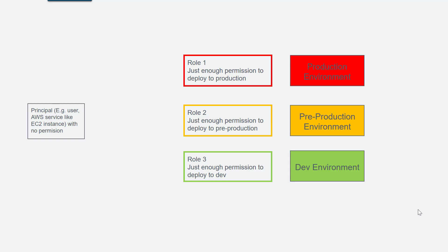Where this becomes handy is when you have multiple environments. Imagine you have three environments: production, pre-production, and development. Instead of three different users or three different EC2 instance profiles, you can define Role 1, 2, and 3 — for example, Role 1 provides just enough permission to deploy into production, and Role 3 provides just enough permission for the development environment. You then define a principal and let these roles trust that principal — which can be a user, EC2 instance, an AWS service, or even an AWS account that a partner or customer owns.